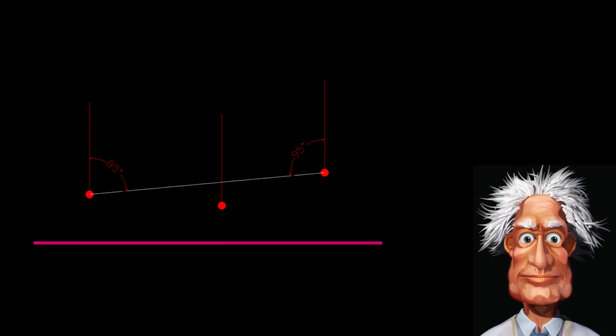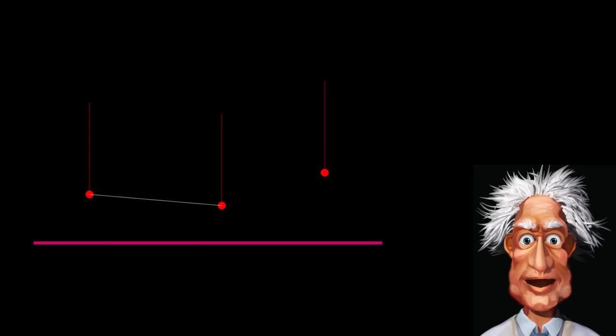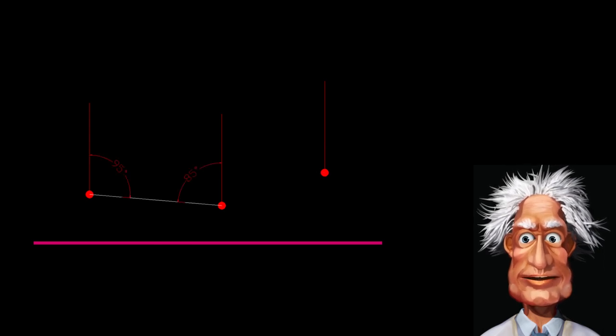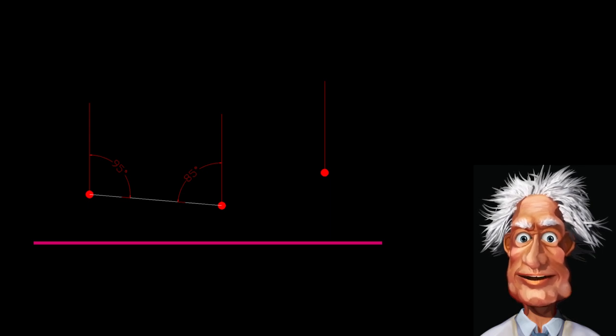When the verticals, or the plumb lines, at those two observation points are parallel, then the sum of both angles should be 180 degrees. If the sum of these angles is less than 180 degrees, then it would mean that the verticals are converging above those observation points. If the sum of these angles would be greater than 180 degrees, then the verticals would be converging beneath both observation points.